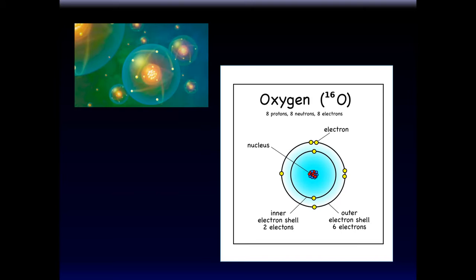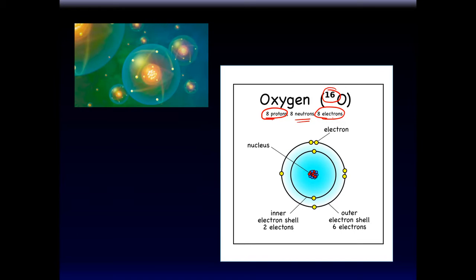There are different models to depict atoms. Here's oxygen-16: it has eight protons and therefore eight electrons. An atom has the same number of protons as electrons; the number of neutrons may vary. An oxygen atom with eight protons may have eight neutrons or nine neutrons.